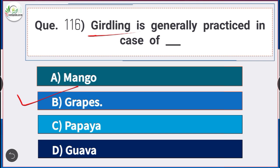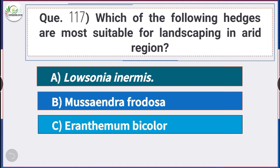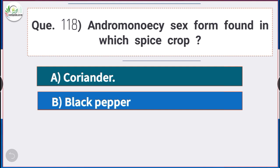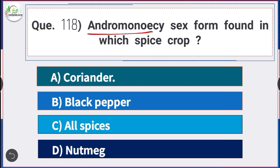Question number 117: Which of the following hedges are more suitable for landscaping in arid regions? Answer is option A — Lawsonia inermis. The hedge that is more suitable for landscaping in arid regions is Lawsonia inermis.